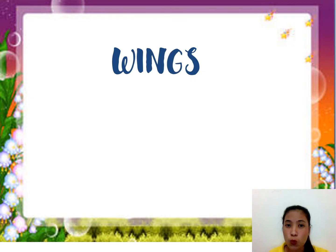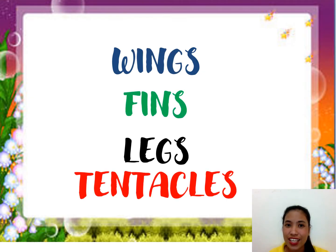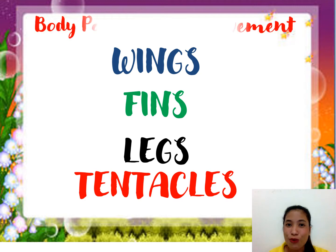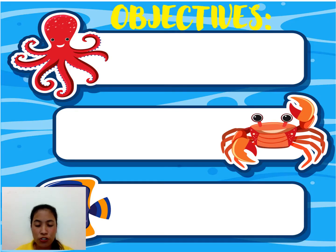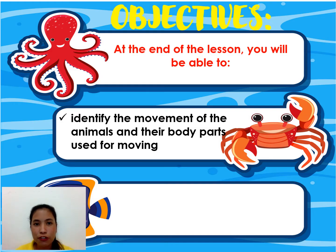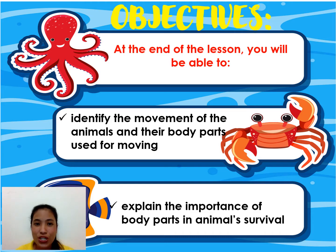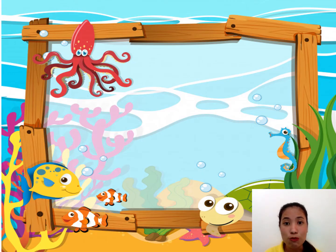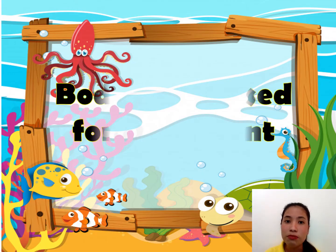Based on our activity, let's have the following parts: wings, fins, legs, and tentacles. Where do you think the animals use those parts? They use those for movement. For our objectives: first, identify the movement of the animals and their body parts used for moving; and explain the importance of body parts in animal survival. Animals have body parts that help them move from one place to another. So how do animals move, and what body parts help them to move? Let's find them out.